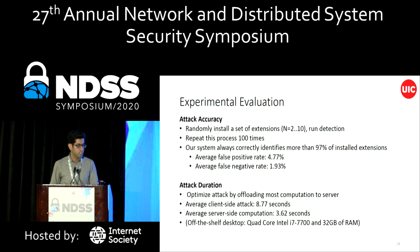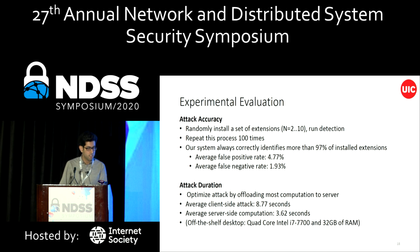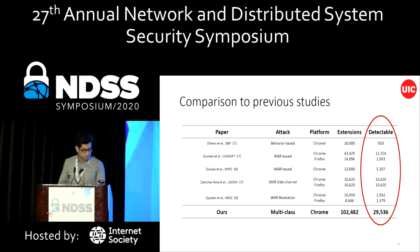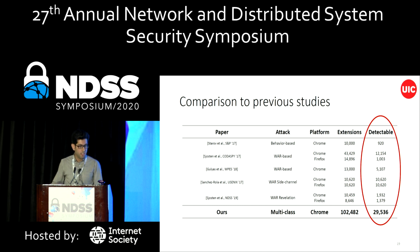We had some false positives — on average less than 5% — and the false negative rate was less than 2%. To optimize the attack, we offloaded most computations to the server side. The client-side attack takes less than 9 seconds, and the average server-side computation needs less than 4 seconds. Compared to previous studies, we use multiple classes of attacks and check more than 100,000 extensions, detecting many more extensions than prior work.